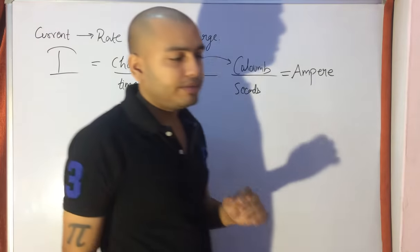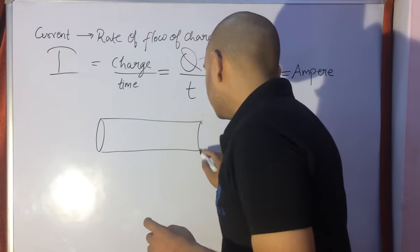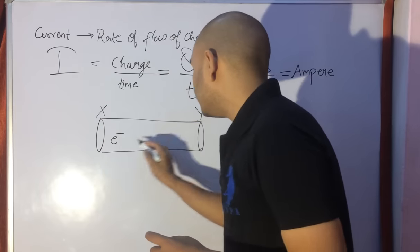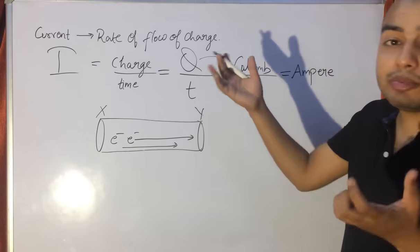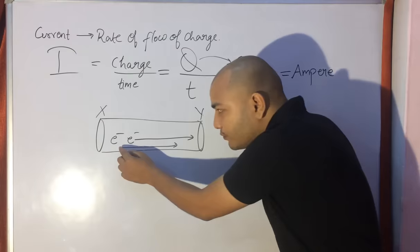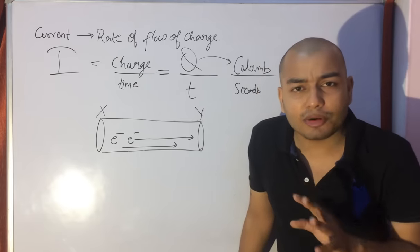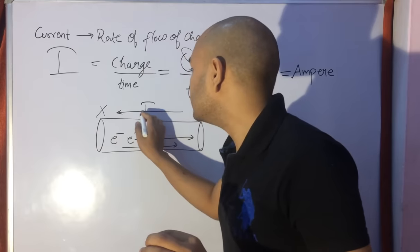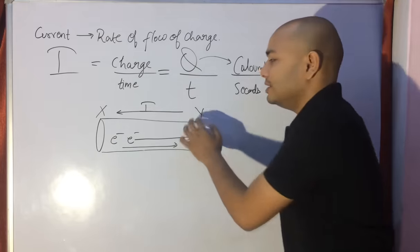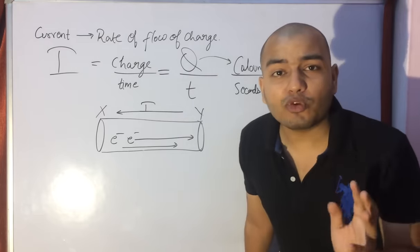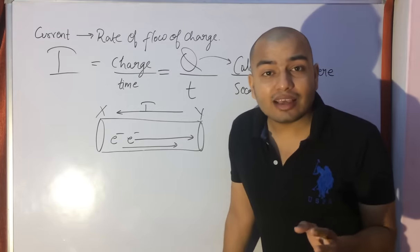Rate of flow of charge is called current. Now there is a convention: suppose I have a conductor and some electrons flow from X to Y. Electrons are flowing, so charge is flowing per unit time — that is current. But it is a convention — and note my words, no one can fully explain why — that if electrons flow in one direction, current goes in the opposite direction. If electrons go from X to Y, current goes from Y to X.